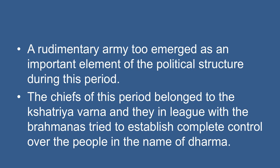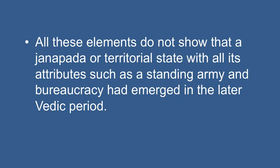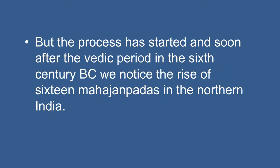The chiefs of this period belonged to the Kshatriya Varna and, in league with Brahmans, tried to establish complete control over the people in the name of Dharma. However, all these elements do not show that a Janapada or territorial state with all its attributes, such as a standing army and bureaucracy, had fully emerged in the later Vedic period. But the process had started, and soon after the Vedic period, in the 6th century BC, we notice a rise of sixteen Mahajanapadas in North India. This brings us to the end of the discussion.